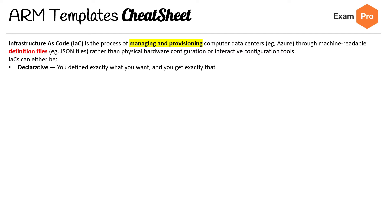IaC comes in two flavors: declarative, which means what you define is what you get, and imperative, where you say generally what you want and it will guess or fill in the blanks for you.